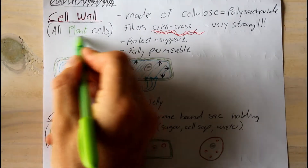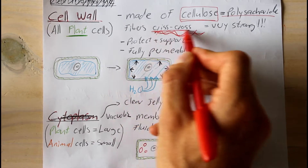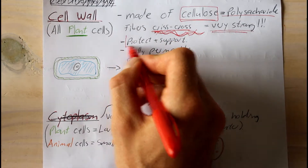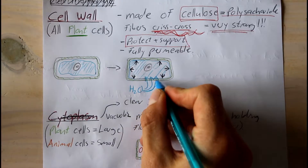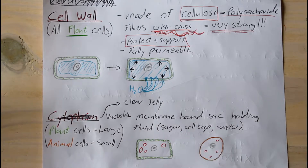This membrane keeps our cytoplasm and all our other organelles within the cell. Next up, we've got our cell wall. A cell wall is found in plant cells, and our cell wall is made out of cellulose, which is a polysaccharide — meaning many molecules attached to each other. These cellulose fibers criss-cross and provide a very strong cell wall. When a plant cell absorbs water, there's a certain amount of pressure that the water exerts outward on the cell wall.